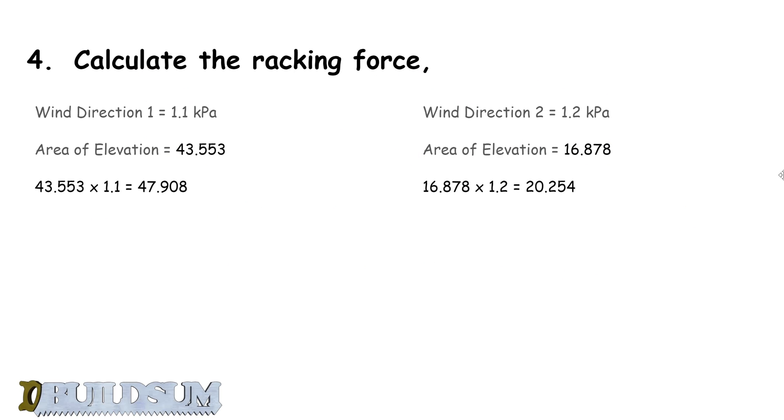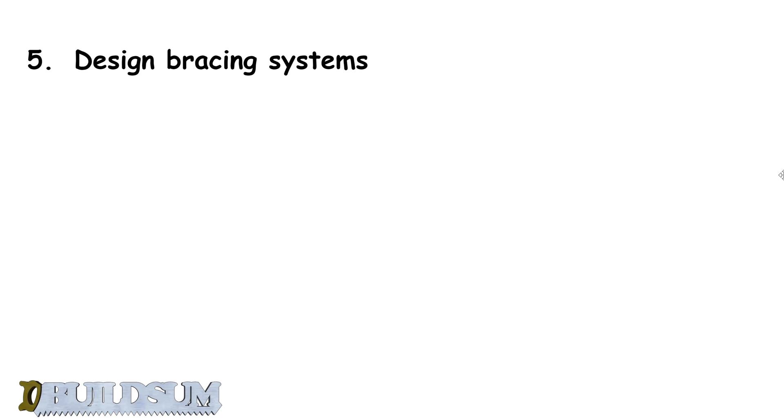So just to recap, previously we worked out the pressure that is going to be applied to our wall. We know that wind direction 1 had an area elevation of 43.553 square meters, which gave us a total racking force of 47.908 kilonewtons. For wind direction 2, we had 20.258 kilonewtons. Now we're going to look at actually designing the bracing to resist that force.